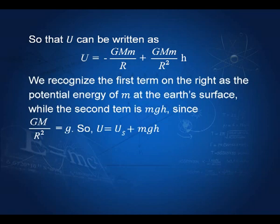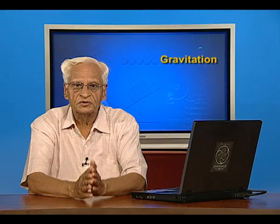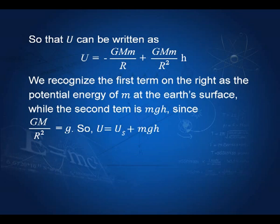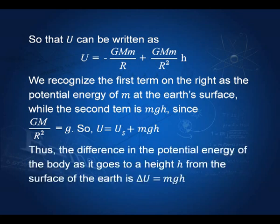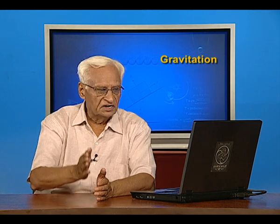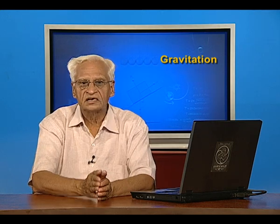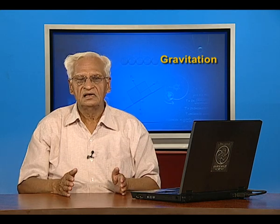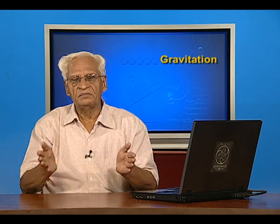We recognize the first term on the right as the potential energy of m at the earth's surface. This minus GM by R is the potential energy of mass m at the surface, and the extra term is mgh, because gM by R squared equals g. So the difference in potential energy as the body goes to height h is delta u equal to mgh. Since it is the potential difference that matters, we can take the zero of energy at any convenient place.